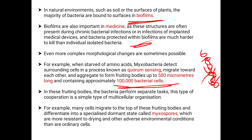In these fruiting bodies, bacteria perform separate tasks — a simple type of multicellular organization. For example, many cells migrate to the top of the fruiting bodies and differentiate into a specialized dormant state called myxospores, which are more resistant to drying and other adverse environmental conditions than ordinary cells.